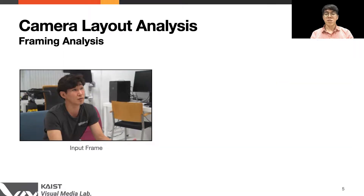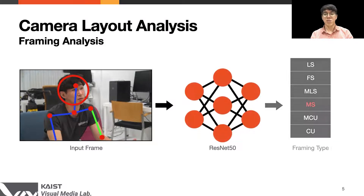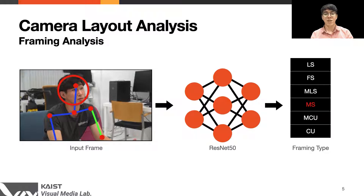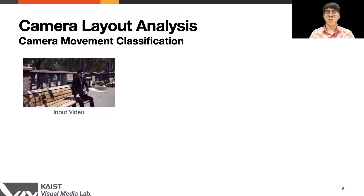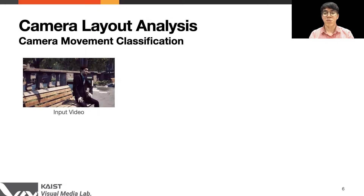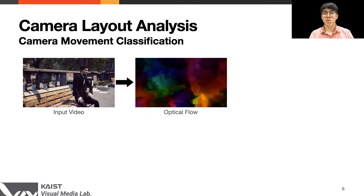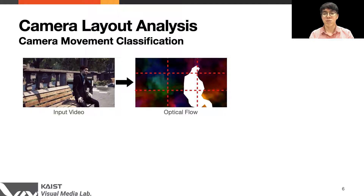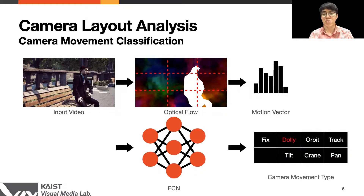For camera layout analysis, we use an off-the-shelf 2D human pose estimation model to extract the position and head ratio of the main subjects. Furthermore, we fine-tune a pre-trained ResNet-50 model to classify the framing type given our input subject. For camera movement classification, given a reference video, we first compute a dense optical flow. In order to accurately estimate the camera movement, we mask out dynamically moving objects from the optical flow. Then we separate the video into 9 regions to encode spatial information, and construct a motion vector by making a histogram of the orientation values of the optical flow. We use these vectors to train a simple 3-layered neural network model to predict the camera movement types.